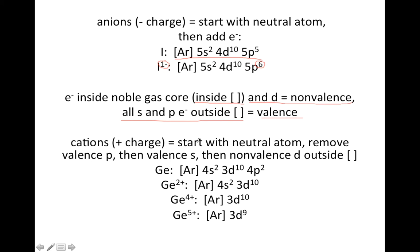If we're doing cations with a positive charge, you're still going to start with the neutral atom, but now we're going to remove electrons because it's positively charged. The order you remove them in is: first remove the valence p, then remove the valence s. And at that point, if you still need to remove electrons, then you can start removing the valence d outside the bracket. Those d's outside the bracket are actually non-valence, so those would be the third ones you removed.